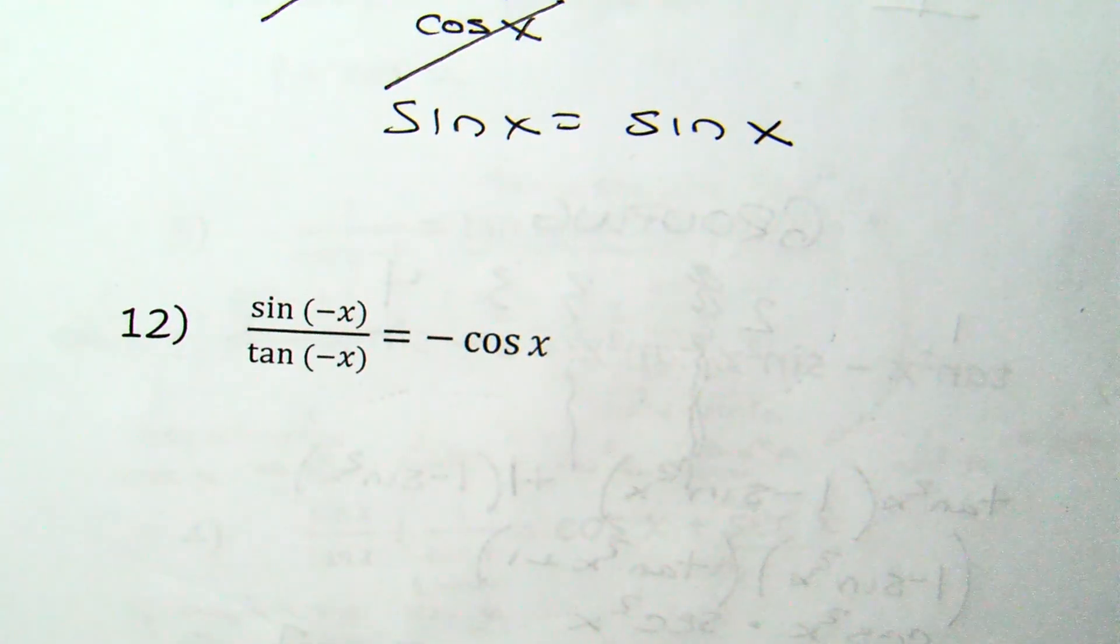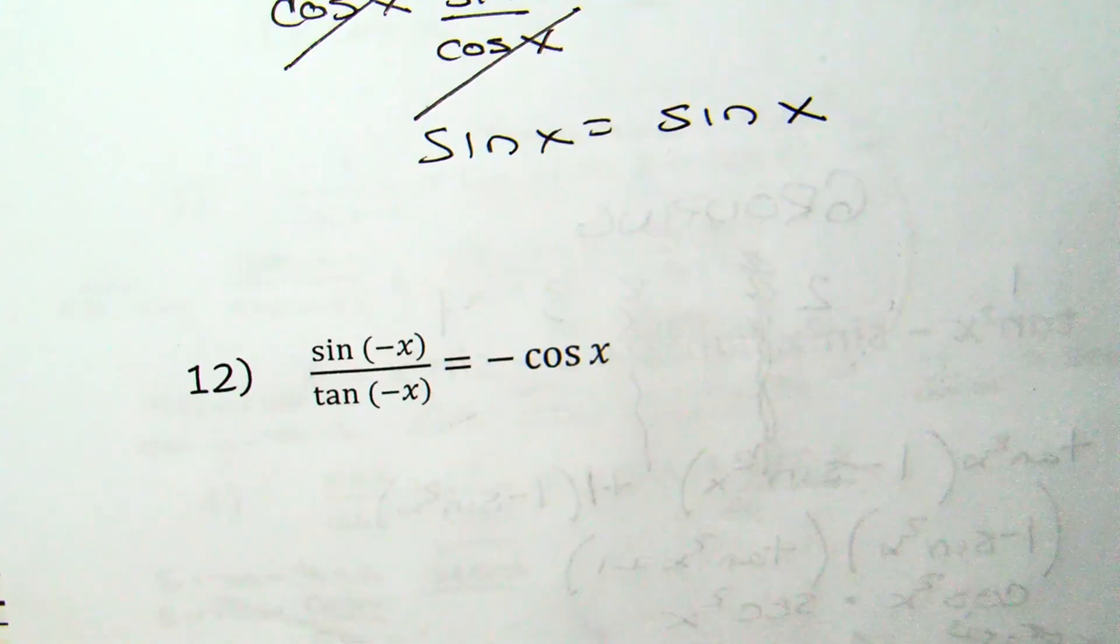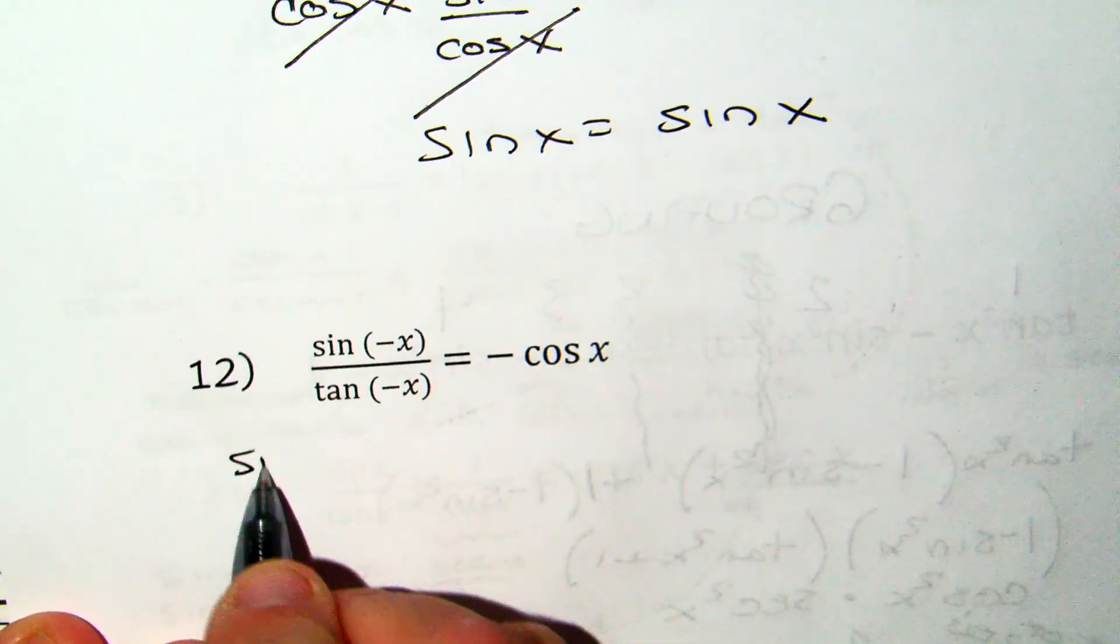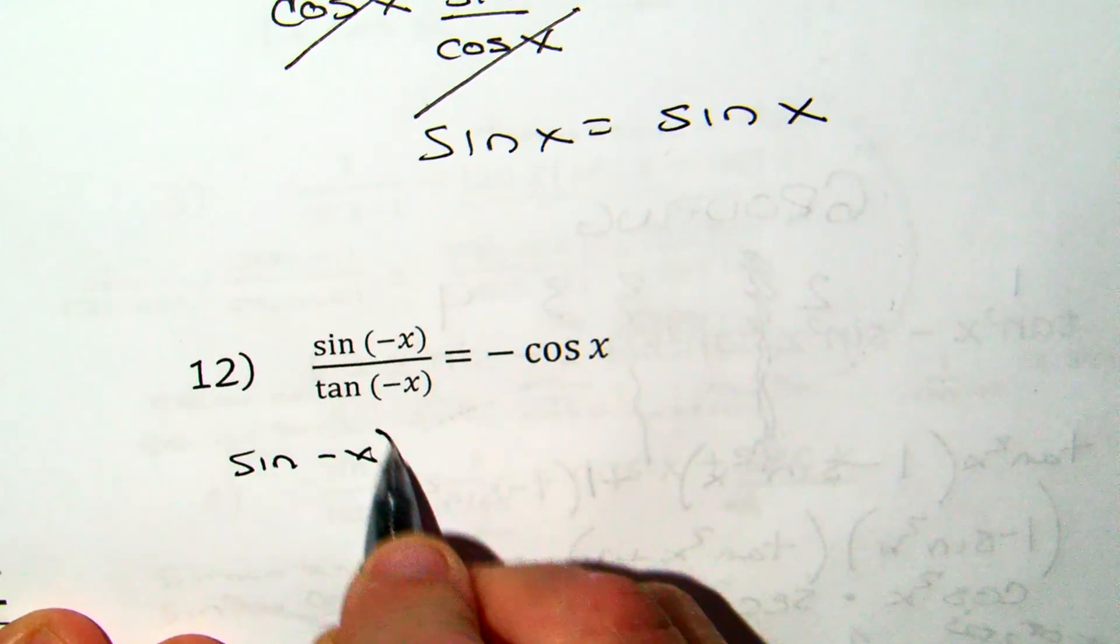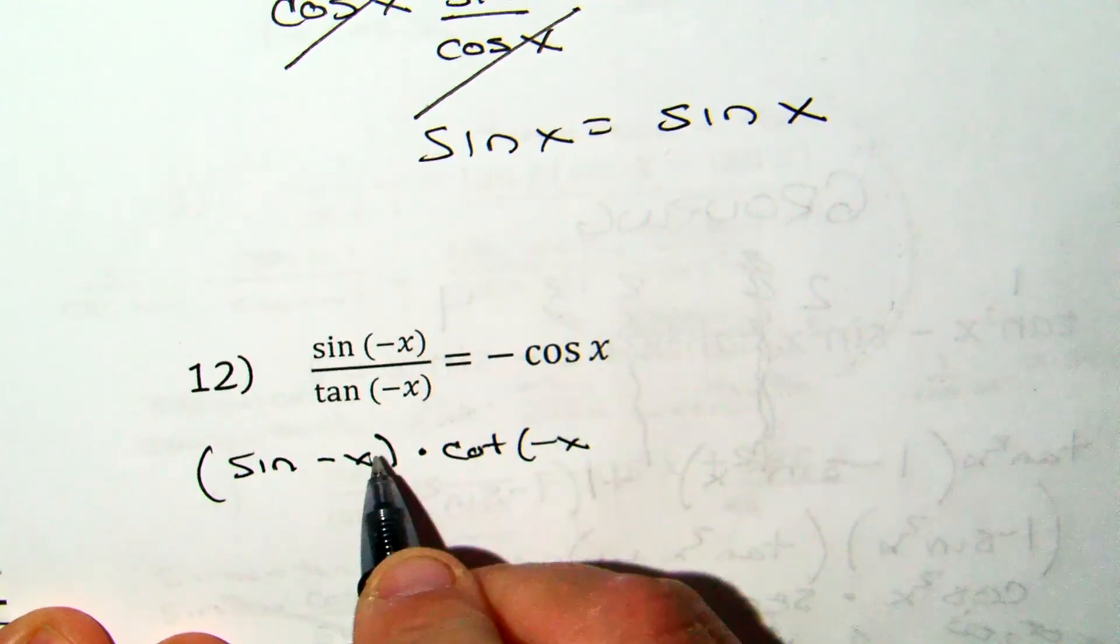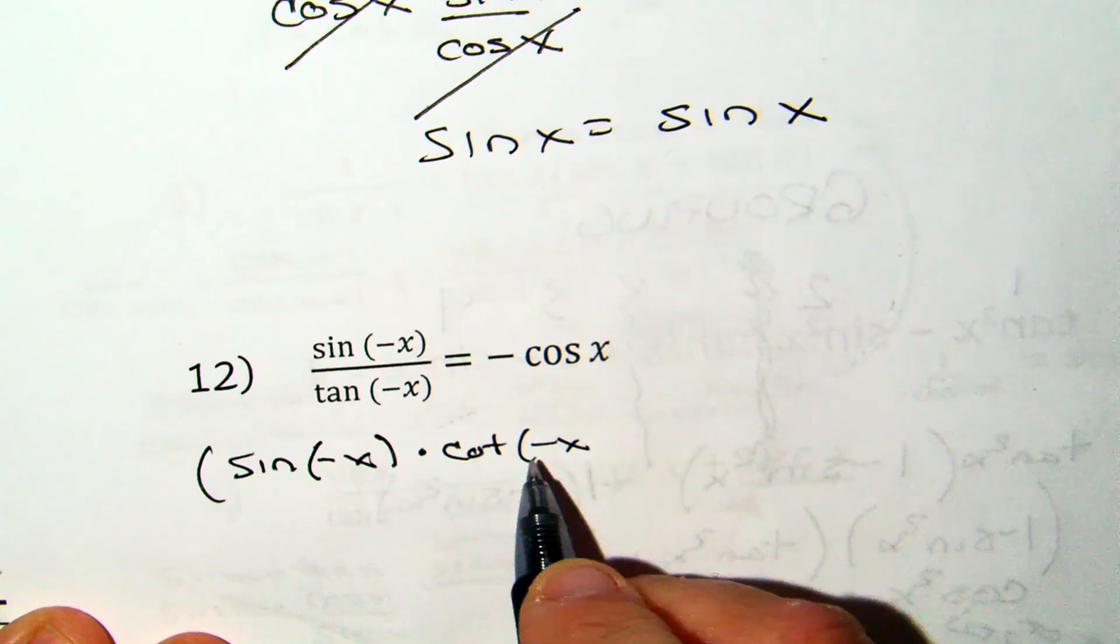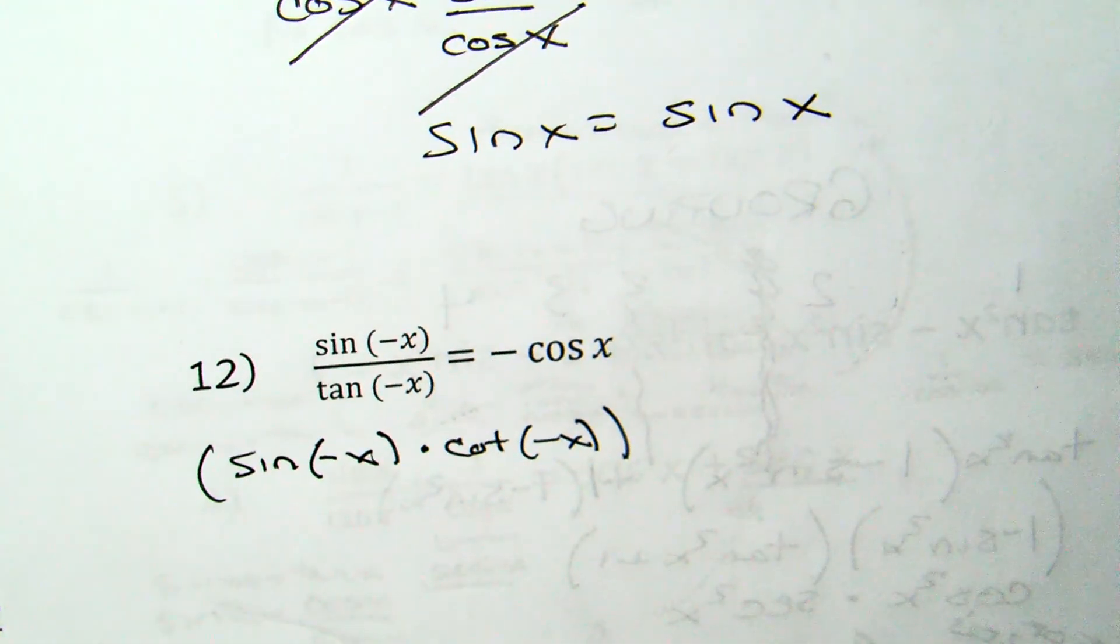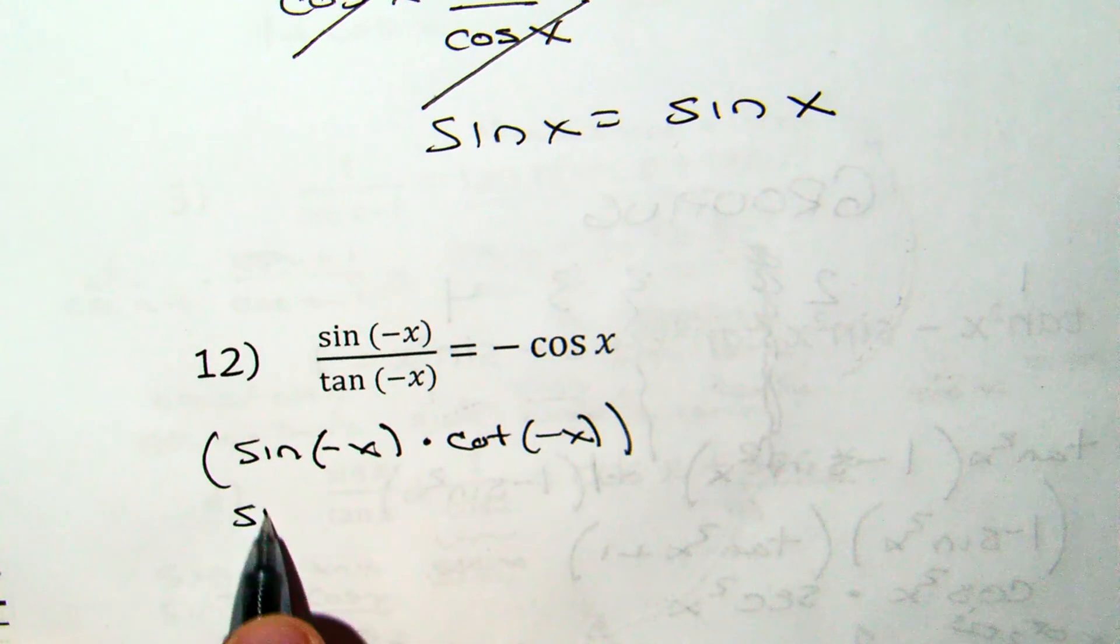sin(-x) over tan(-x): sin(-x) times cot(-x) over sin(-x).